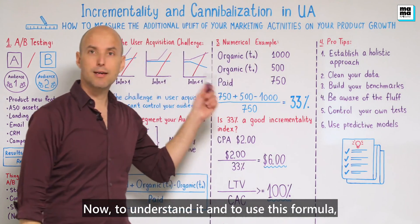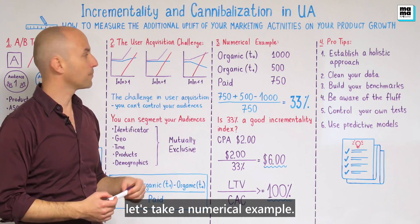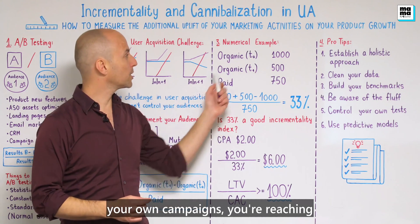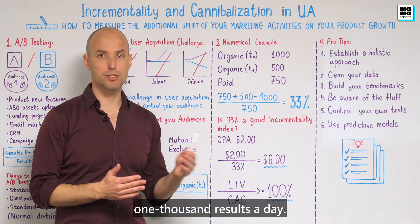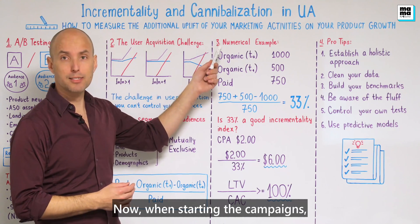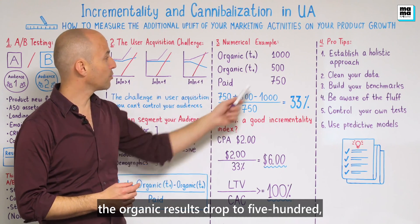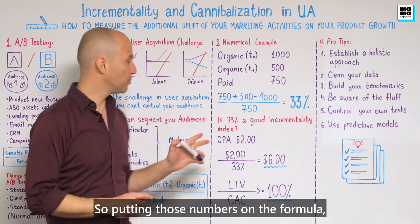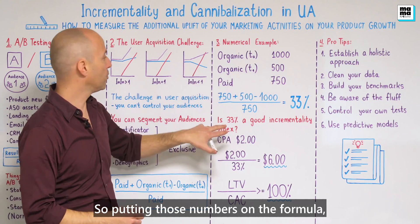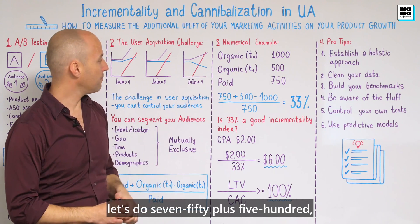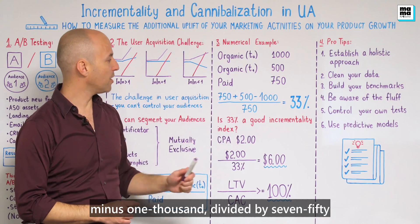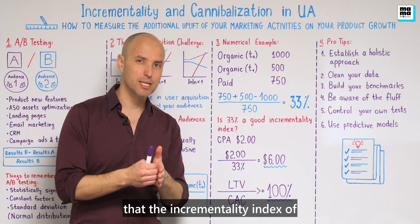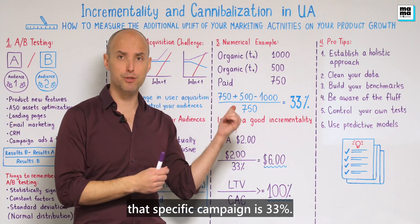To understand and apply this formula, let's take a numerical example. Let's say that at T0, before starting your campaigns, you're reaching 1,000 results a day. When starting the campaigns, organic results drop to 500 while paid results are 750. Putting those numbers into the formula: (750 + 500 − 1,000) / 750 = 33%. This means the incrementality index of that specific campaign is 33%.